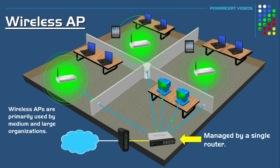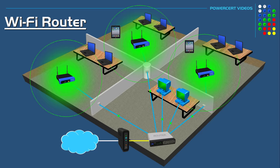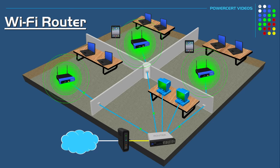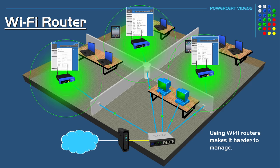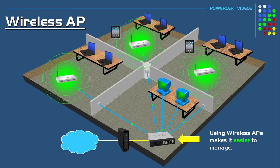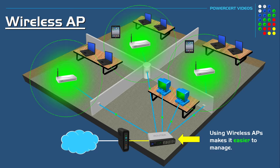In reality, this office can use wi-fi routers instead of wireless APs and it would work just fine. But the problem with using wi-fi routers instead of wireless APs is manageability. If the network administrator wanted to manage the network and make certain changes, he would have to log into each wi-fi router to make that change, which could be a hassle and time consuming. But if this office was using wireless access points instead, all the management and configuration changes would be done by this single router, which makes managing a network a lot easier. All the wireless devices can be treated as a single subnet instead of multiple subnets if wi-fi routers were used.